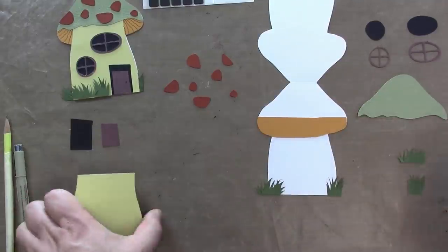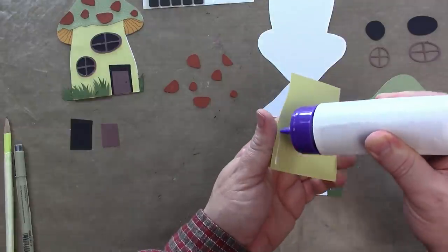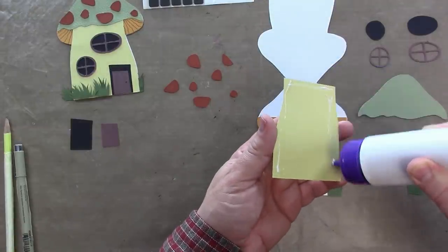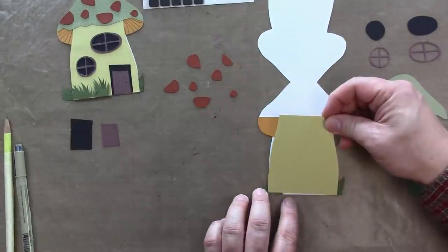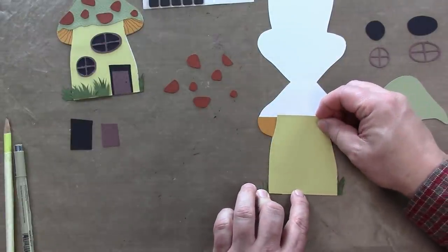Now we're going to adhere the stem. You don't really need that much adhesive, just a little bit around the edges and some in the middle. And again, it should line up with the contour of the card just perfectly.